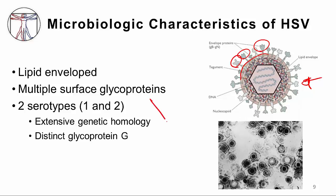There are two serotypes of the herpes virus: HSV-1 and HSV-2. These serotypes have extensive genetic homology — they look very much alike. However, one distinguishing feature is the surface glycoprotein G, which becomes important in serologically testing for HSV-1 versus HSV-2. The other picture on this slide is that of an electron micrograph of an HSV virus.